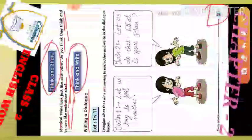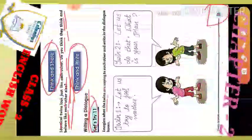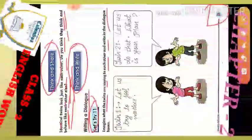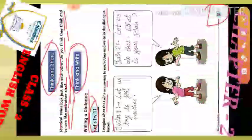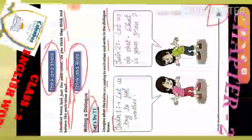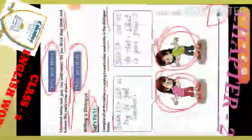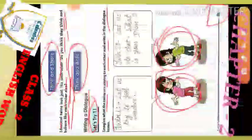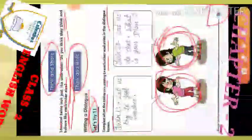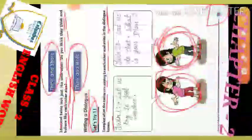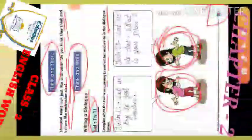Now 'Think and Write: Writing a Dialogue.' Imagine what the twins are saying to each other and write it in the dialogue boxes. You have to imagine and suppose what they are talking about. Here you can see there are two girls who are twins — they are talking to each other. You have to imagine what they are discussing and write your sentences in the dialogue boxes.